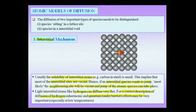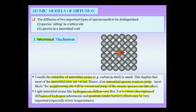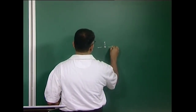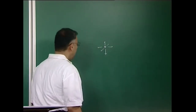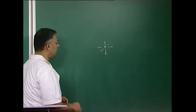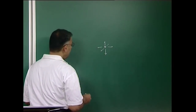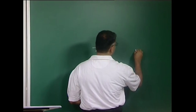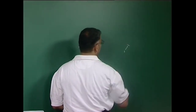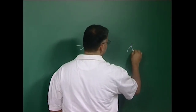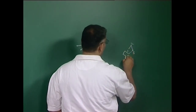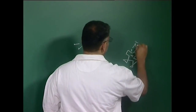An atom sitting in the interstitial site has many options to jump. At any finite temperature, the atom is vibrating in all three dimensions. Schematically, when this atom vibrates about its position, there is a chance it will actually jump—say from position 1 to neighboring position 2, then to site 3, then to site 4—undergoing what is called a random walk process.